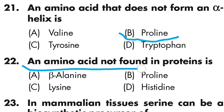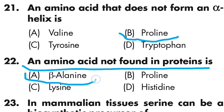Question number twenty-two: an amino acid not found in proteins is — Option A is beta-alanine, Option B is proline, Option C is lysine, Option D is asparagine. Option A is correct — beta-alanine is an amino acid not found in proteins.